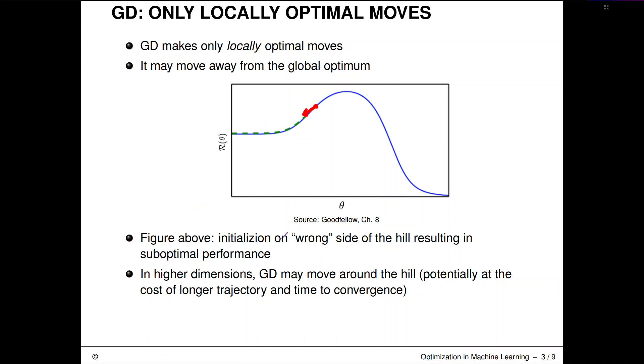That depends on the exact location of our initialization points in higher dimensions. Gradient descent may actually somehow move around this thing if that's possible. This will usually come at the cost of a longer trajectory and more time for convergence. But at the very least, we would still converge to the right area. But this will not always work.